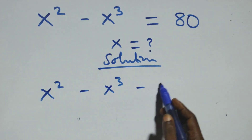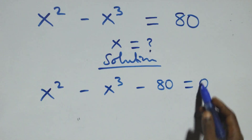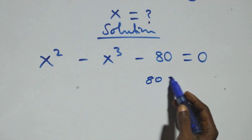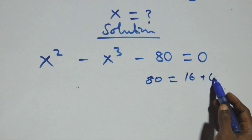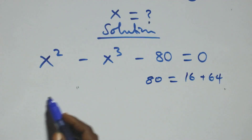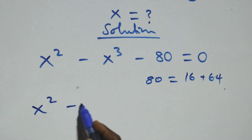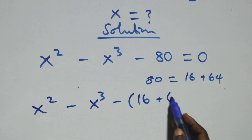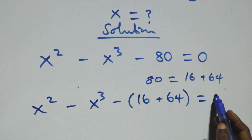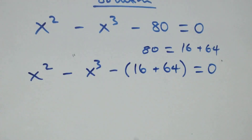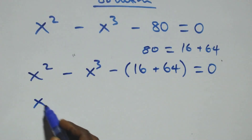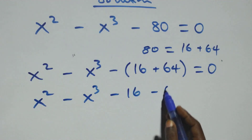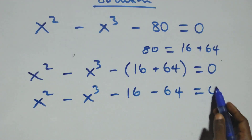x cubed minus 80 now equals zero. Next step, we can express 80 as 16 plus 64. Then this equation becomes x squared minus x cubed minus bracket 16 plus 64 close bracket equals zero. Opening the bracket we have x squared minus x cubed minus 16 minus 64 equals zero.